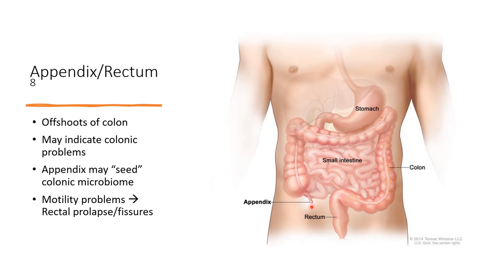The appendix and rectum are offshoots of the colon worth examining separately. Data suggests the appendix may seed the colonic microbiome, functioning as a blueprint for bacteria in the cecum and beyond. Motility problems or dry hard stool can cause rectal prolapse — the rectum turning inside out — and fissures, which are tears in the rectal lining. Appendicitis or rectal prolapse and fissures are likely indicative of problems throughout the entire colon.